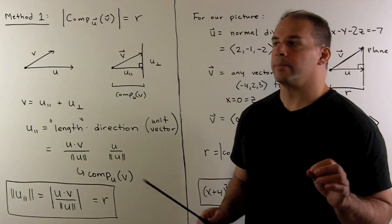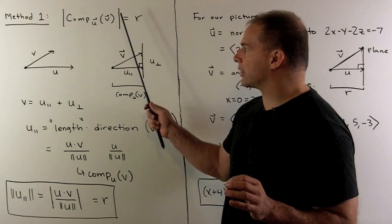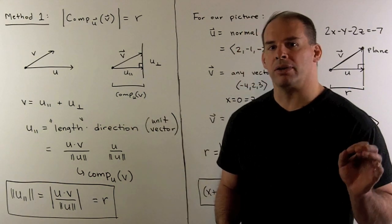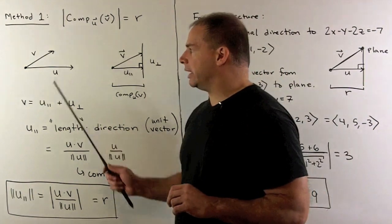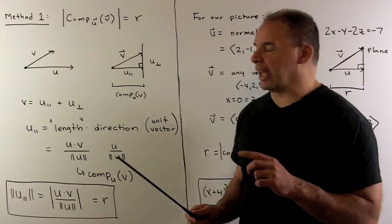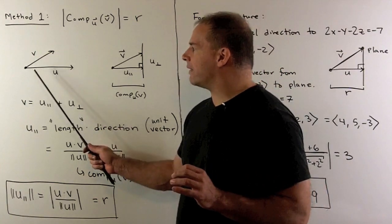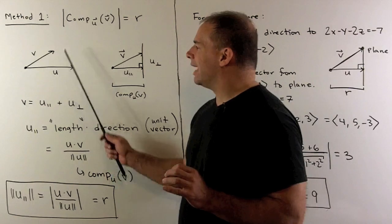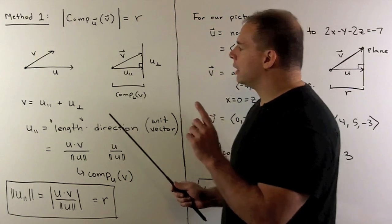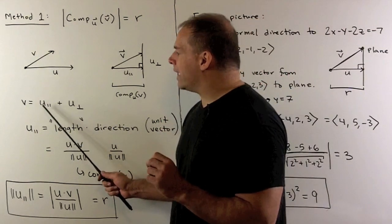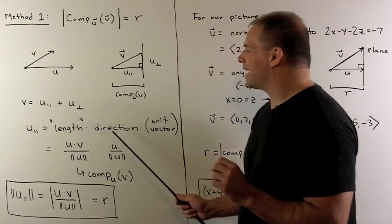For our first method, we compute r as the absolute value of the component of a vector v in the direction of another vector u. So recall, if we have two vectors u and v, suppose they span a plane, then I can write v as the sum of a vector parallel to u and a vector perpendicular to u.